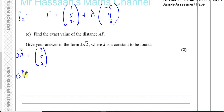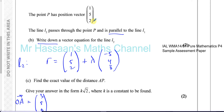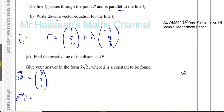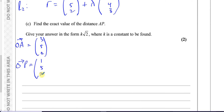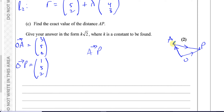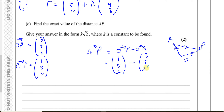We need to find the vector from A to P. Imagine O, A, and P in 3D space. The vector AP equals −OA + OP, which is the same as OP minus OA. So we compute (1, 5, 2) minus (3, 5, 0), giving: 1 − 3 = −2, 5 − 5 = 0, and 2 − 0 = 2. So the vector from A to P is (−2, 0, 2).